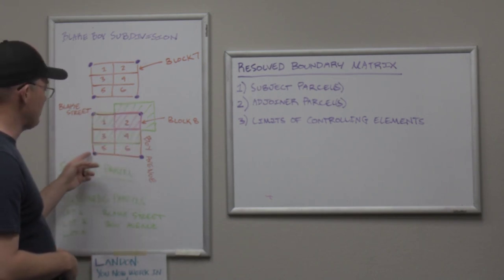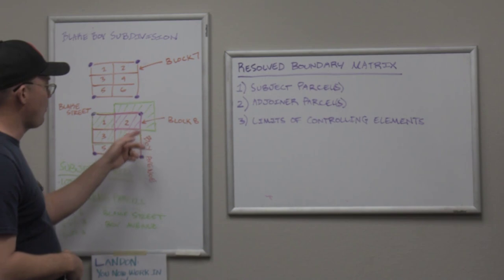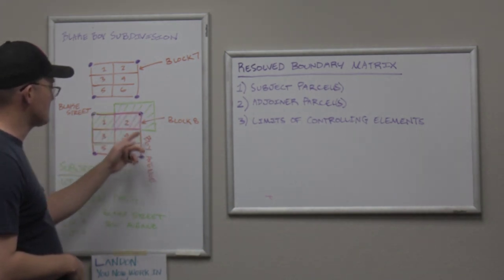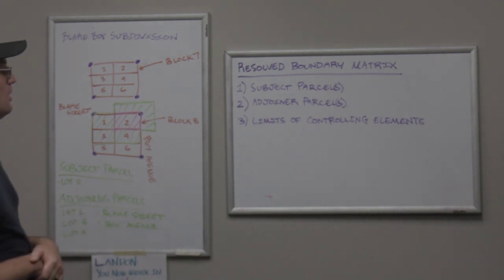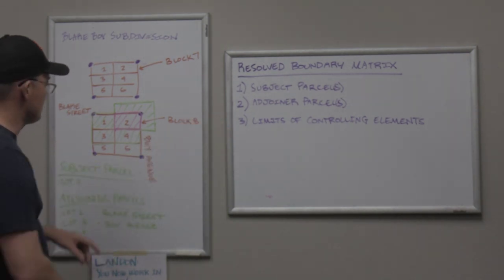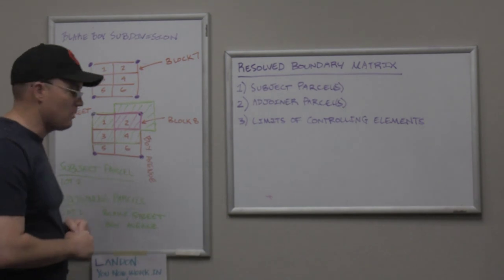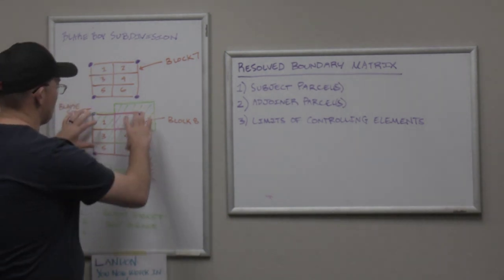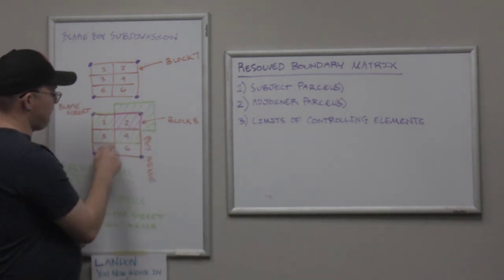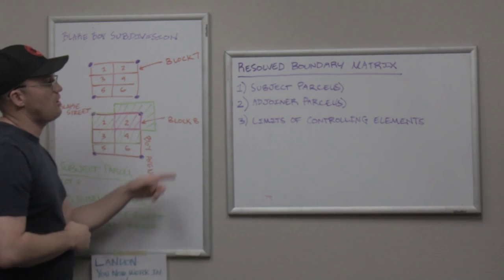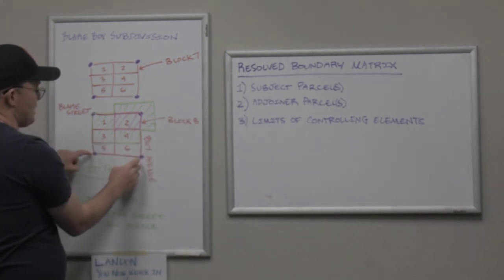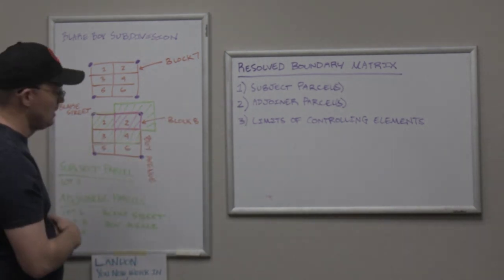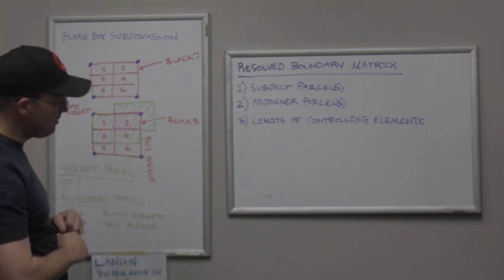Say we found four original subdivision monuments — controlling original subdivision monuments — at the corners of Block 8. Then the limits of the controlling elements are bounded by this block; we're going to be bounded by those four monuments. Even though Lots 5 and 6 aren't in our adjoining parcels, they are in our limits of controlling elements — we've got to come down here and look for these two corners. That's the best-case scenario.